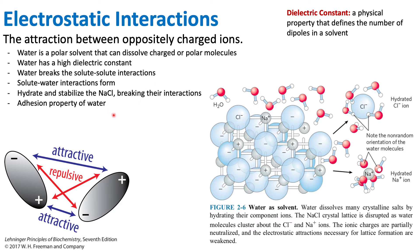Electrostatic interactions involve some sort of a compound that dissolves into a polar solvent, and that polar solvent will break apart that molecule by hydrating it and stabilizing it. This results in an electrostatic interaction — a positive and negative attraction and a repulsion between like charges.